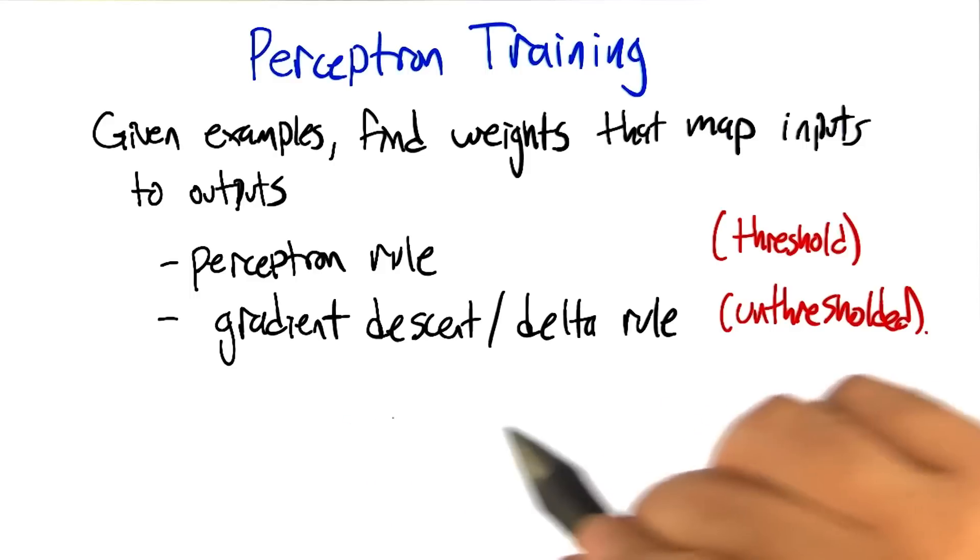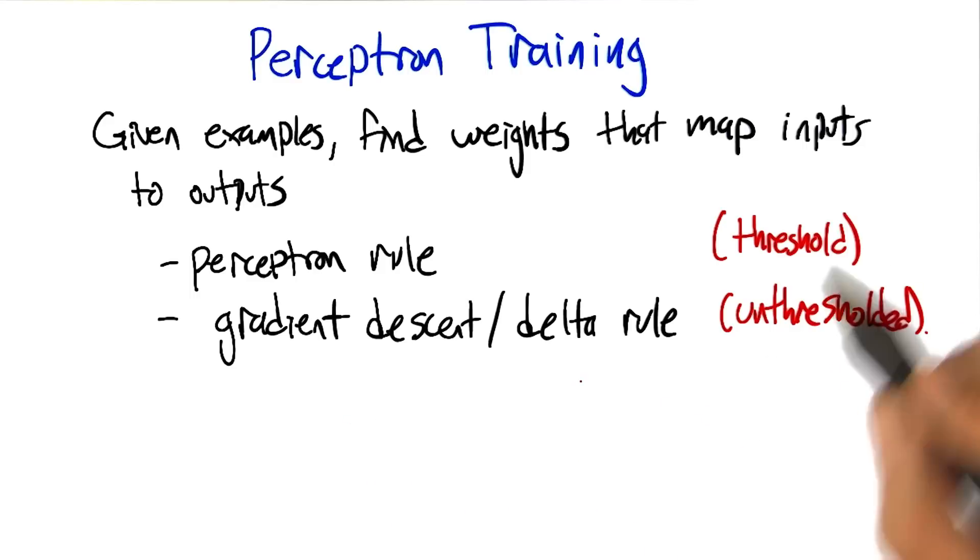One is called the perceptron rule, and the other one is called gradient descent, or the delta rule. And the difference between them is the perceptron rule is going to make use of the thresholded outputs, and the other mechanism is going to use unthresholded values.